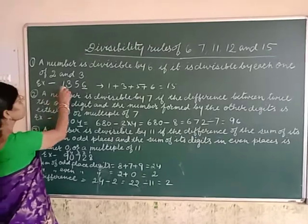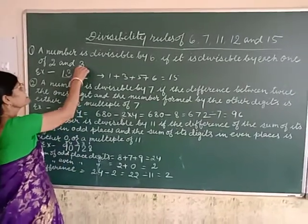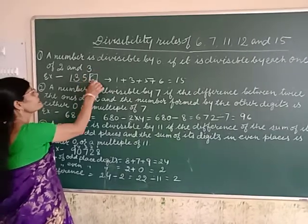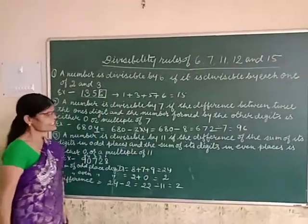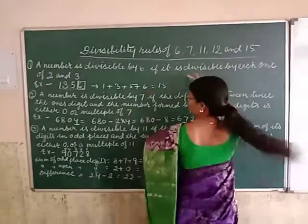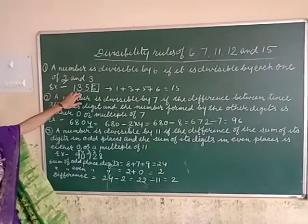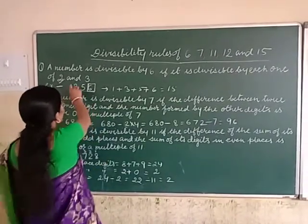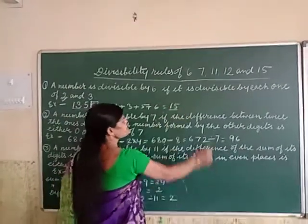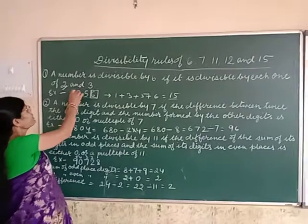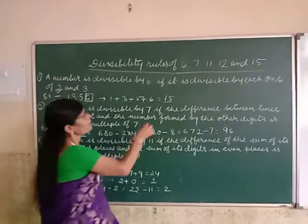Now see the example: 1,356. We can see this number is divisible by 2 because it is even — its last digit is 6. Now, it should also be divisible by 3. Test divisibility by 3: 1 + 3 + 5 + 6 = 15. 15 is a multiple of 3, so it is divisible by 3 also. So number 1,356 is divisible by 2 as well as 3, and that is why it is divisible by 6.